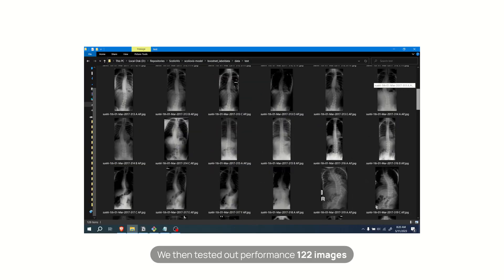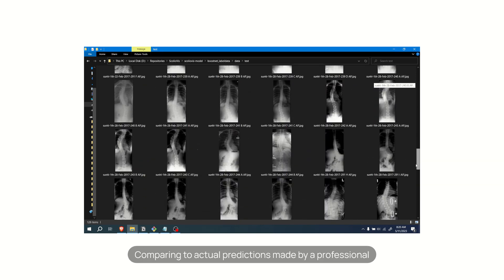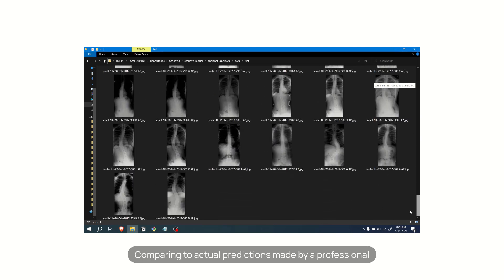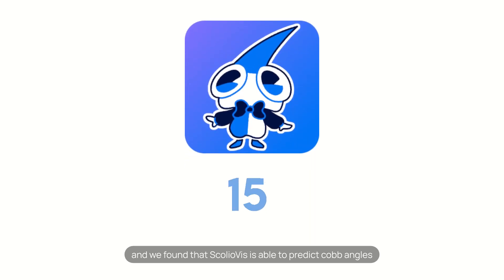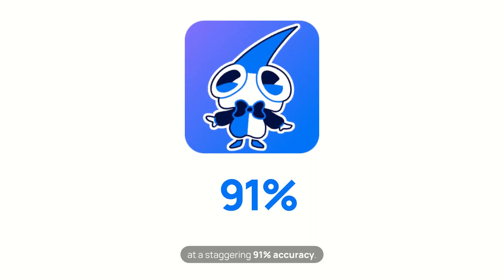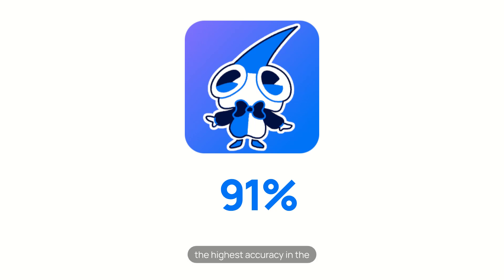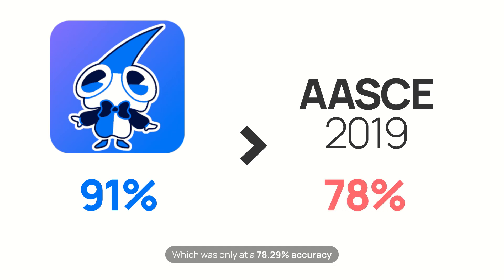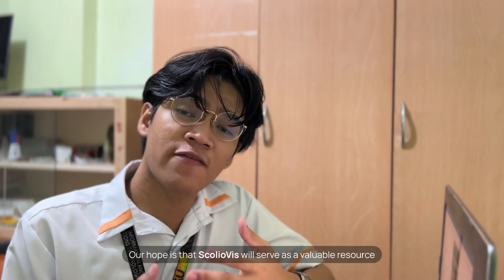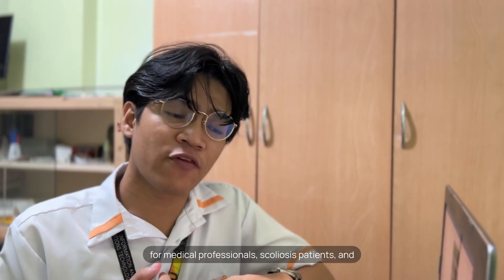We tested our performance on 122 images, comparing to actual predictions made by a professional, and found that ScolioViz is able to predict Cobb Angles at a staggering 91% accuracy. We are proud to say this has even exceeded the highest accuracy at the Accurate Automated Spinal Curvature Estimation grand challenge in 2019, which was only 78.29%.